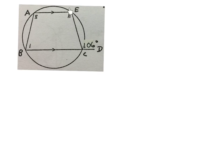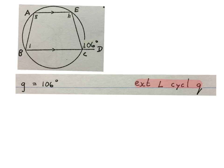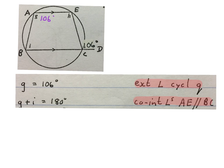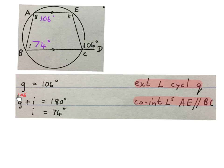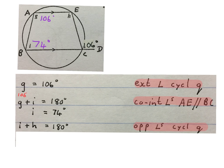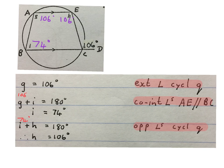In this rider we have a circle again with a cyclic quad and an exterior angle of 106 degrees, which equals angle G — exterior angle of a cyclic quad. We also have parallel lines. Because the two lines are parallel, G plus I equals 180 — co-interior angles, AE parallel to BC. Since G is 106 degrees, I equals 74 degrees. Then I plus H equals 180 — opposite angles of a cyclic quad — so H equals 106 degrees.